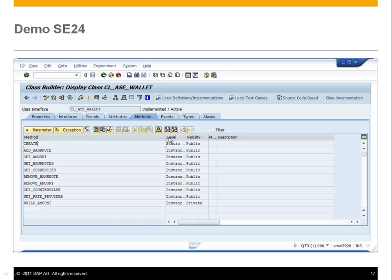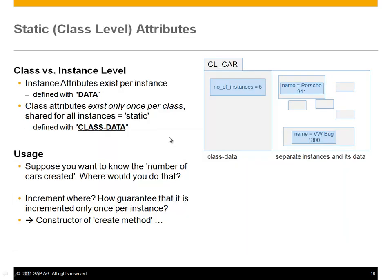Coming back to the slides: next we're going to talk about static, class-level attributes. So far we talked about instance attributes — they exist per instance. For example, one car object has a name attribute with value 'Porsche 911' and another car has 'VW Bug'. Each object has its own data. Sometimes you want data that is common to all instances of a class.